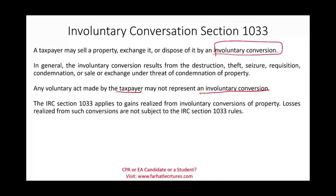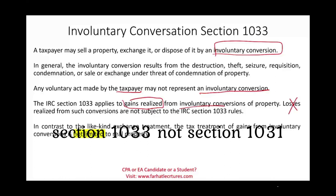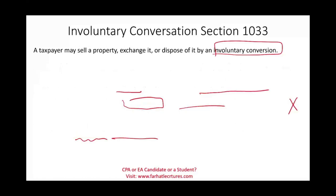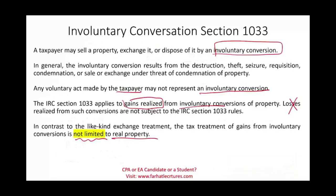Section 1033 applies to gain realized from involuntary conversion, not for losses — we'll talk about that later. In contrast to Section 1031 like-kind exchange treatment, the tax treatment of gains from involuntary conversion is not limited to real property. So going back to the picture, real property is the apartment building and personal property is the boat. Section 1033 applies to both real and personal property.